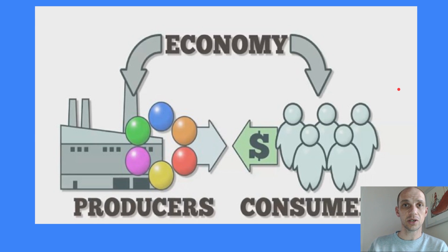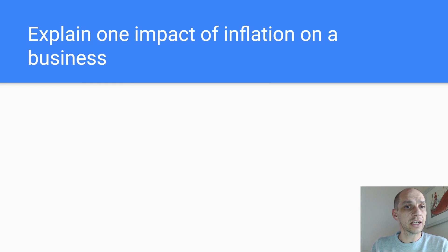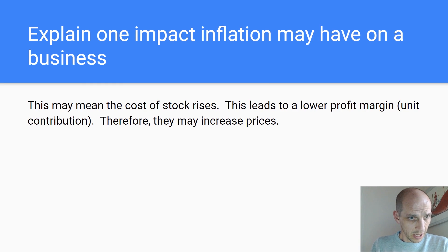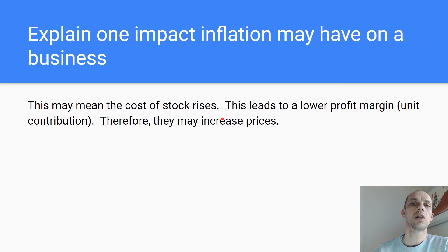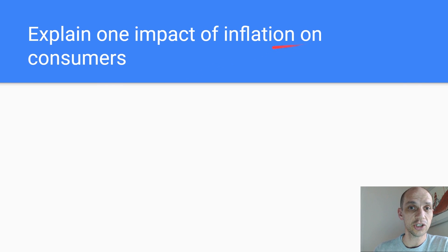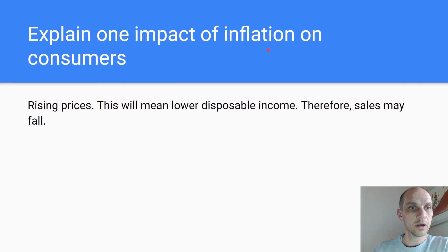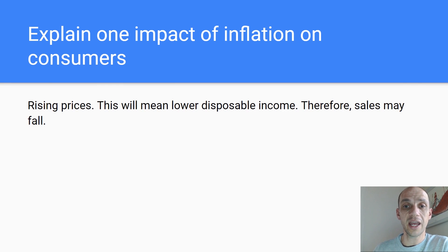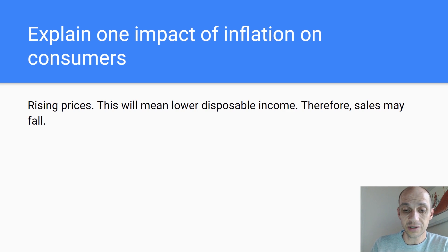Into the economy — an area students often find quite tricky. Explain one impact of inflation on business: this may mean the cost of stock rises, leading to a lower profit margin or unit contribution. Therefore, they may increase prices. Explain one impact of inflation on consumers: rising prices will mean lower disposable income. Therefore, sales may fall — because people's money doesn't go as far.